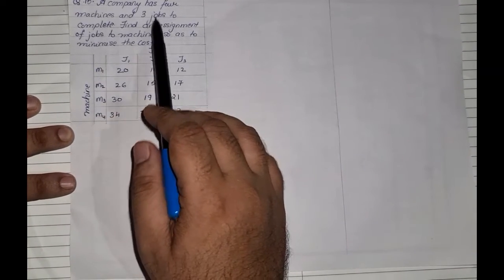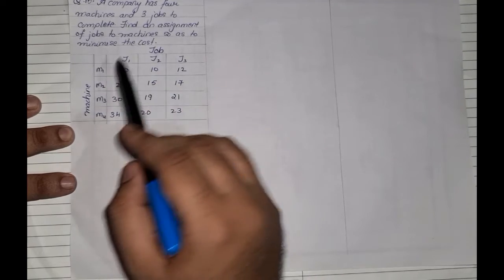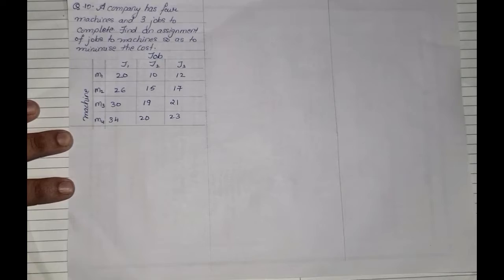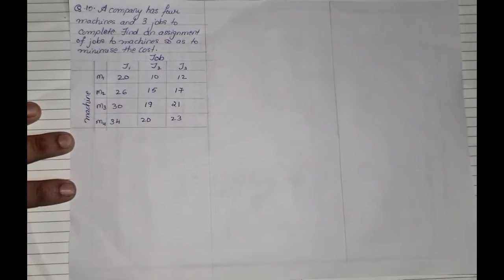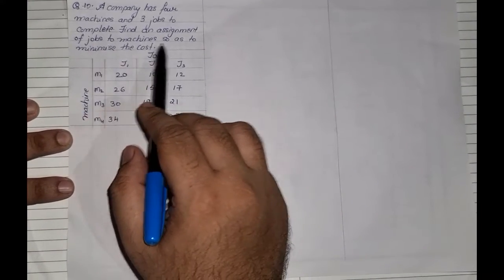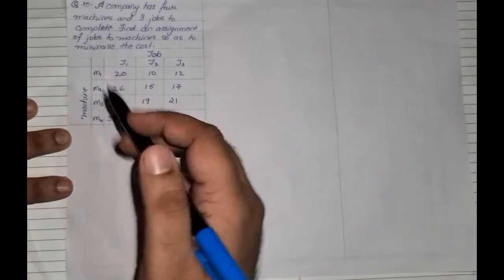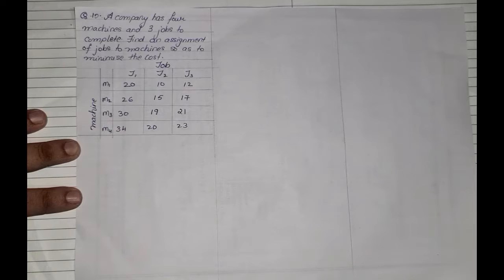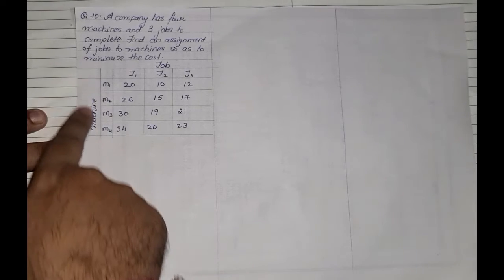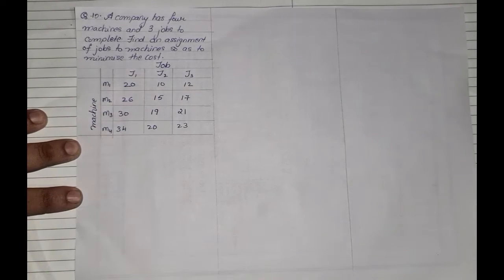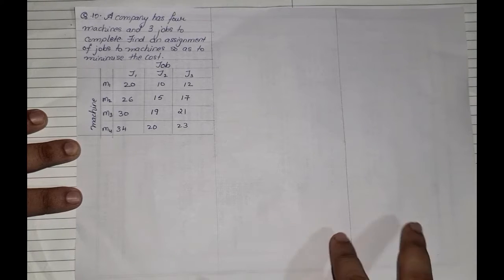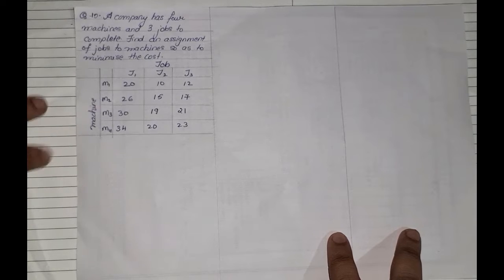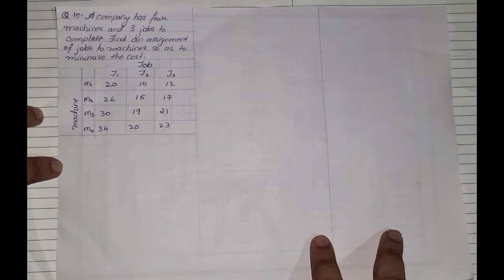A company has 4 machines and 3 jobs — machines are 4, jobs are 3. It is not a balanced assignment question. Find an assignment of jobs to machines so as to minimize the cost. It is a minimization problem, but it is not a balanced problem. There are 4 rows but only 3 columns, so we will have to make it balanced.